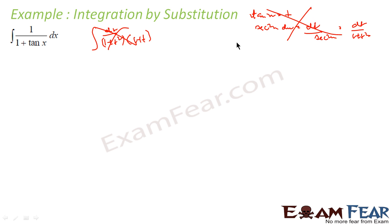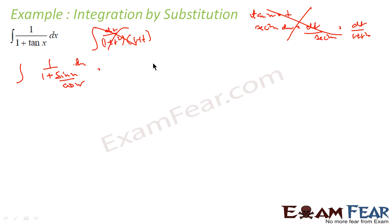Let us try something else. Let us convert tan x into sin and cos form, because this may help us — just a trial. So 1/(1 + tan x) becomes 1/(1 + sin x/cos x), which simplifies to cos x dx/(cos x + sin x).